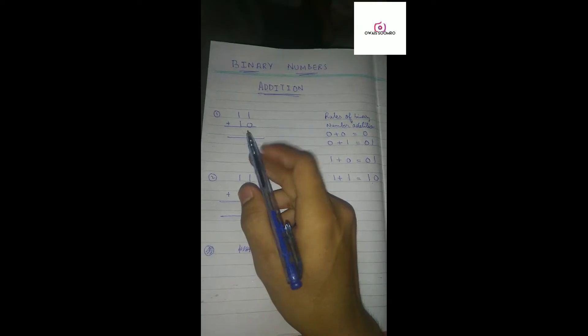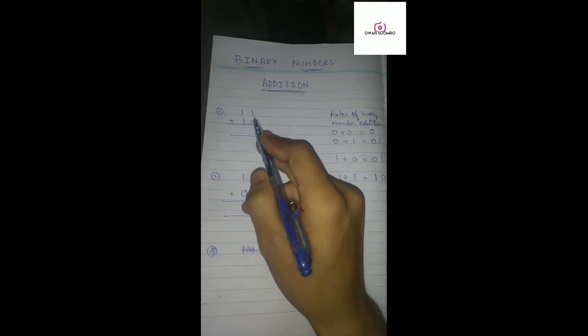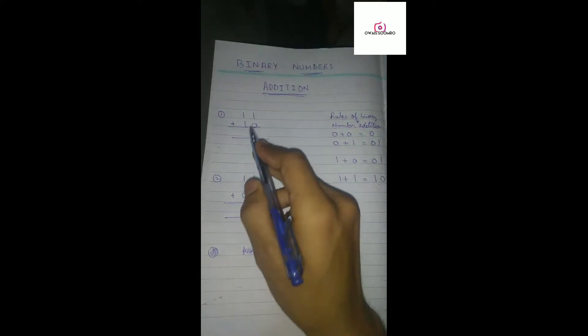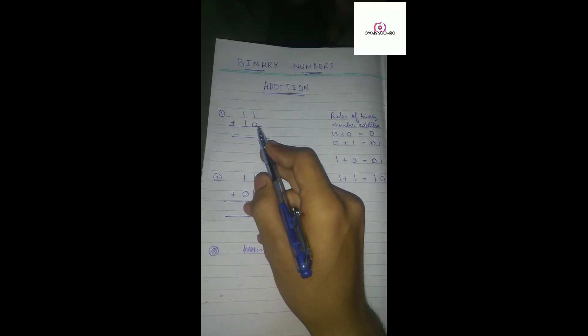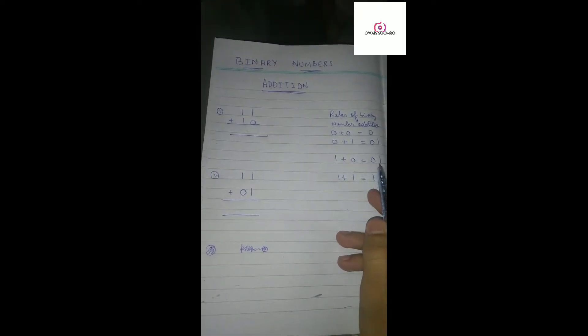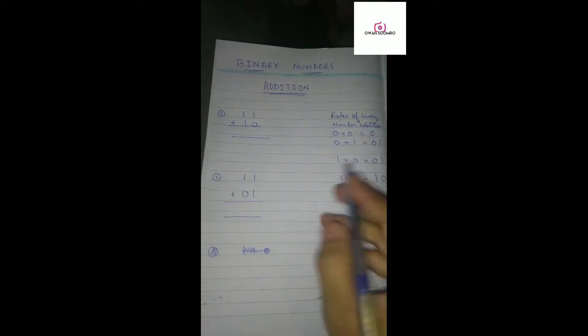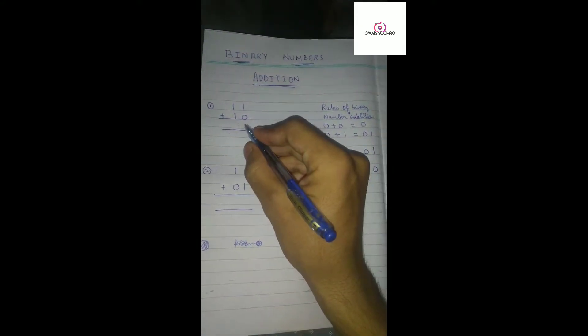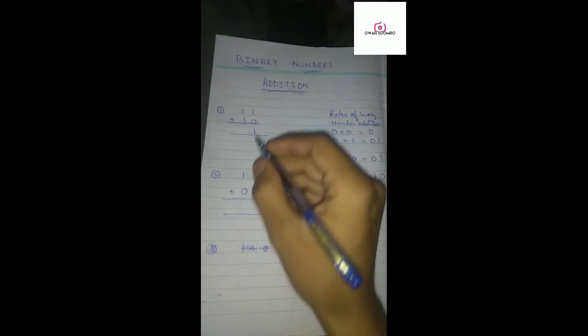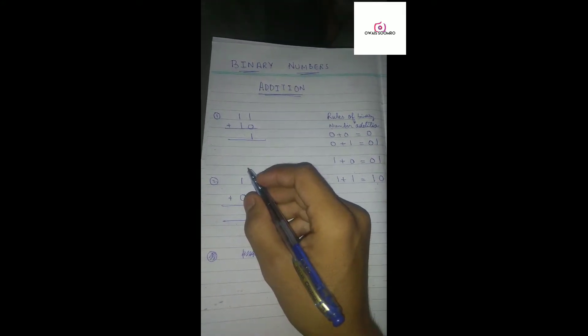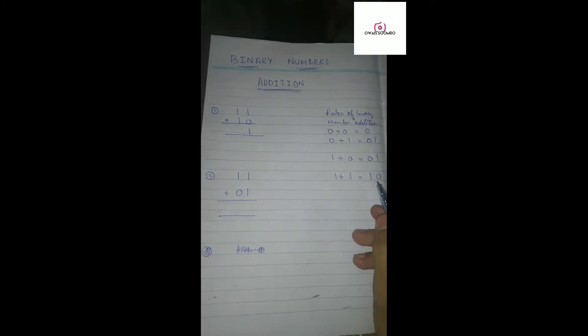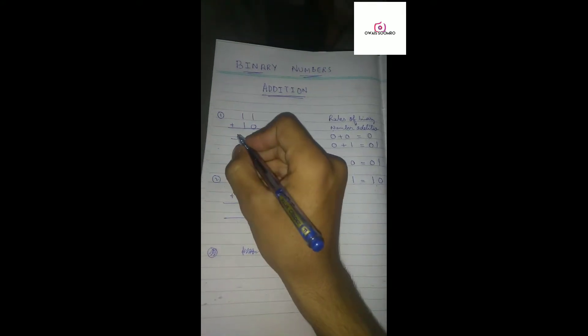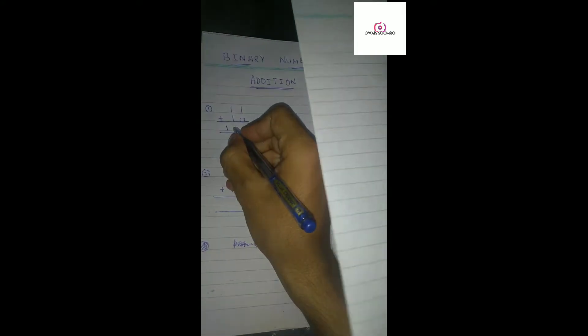Here is written one question: 1 plus 1110. So 1 plus 0. According to the rule, 1 plus 0 equals 01, which means here will become 1. And 1 plus 1, according to the rule, 1 plus 1 equals 10. So here will be the answer: 1 and 0. This is our answer.